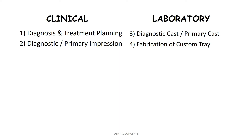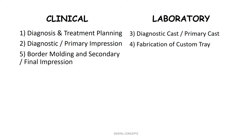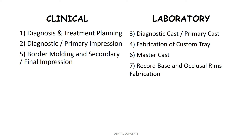There are two types of impression trays: stock trays and custom trays. Stock trays are used for the primary impression, and custom trays — that is, individualized trays — are used for border molding and the secondary or final impression. When we pour the secondary impression we get the master cast.